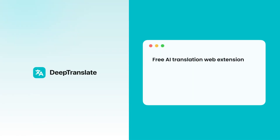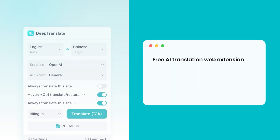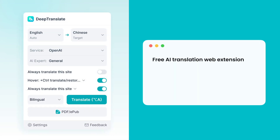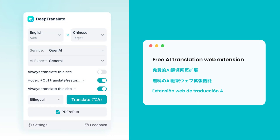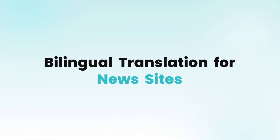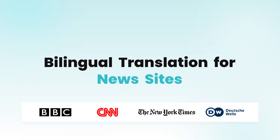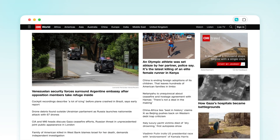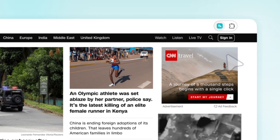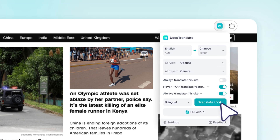DeepTranslate. Free AI translation web extension — instantly translate the full page with just one click. Bilingual translation for news sites. Stay informed with the latest global events in your native language.